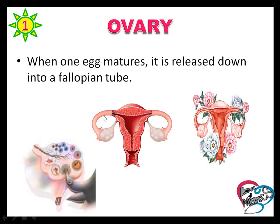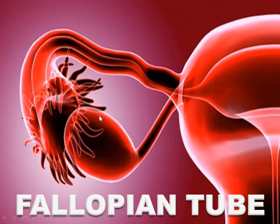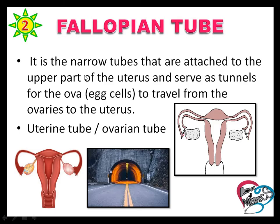When one egg is matured, it is released down into the fallopian tube. The fallopian tube is the narrow tube that attaches to the upper part of the uterus and serves as the tunnel for the ovum, that is egg, to travel from the ovary to the uterus.